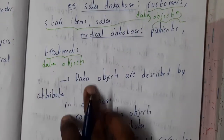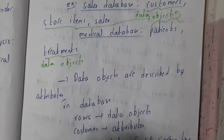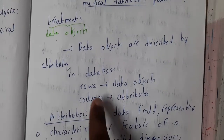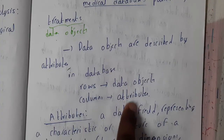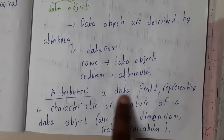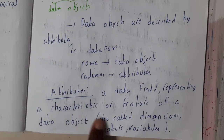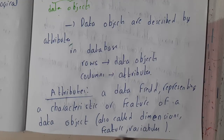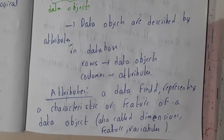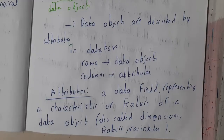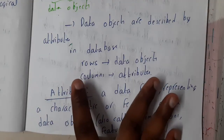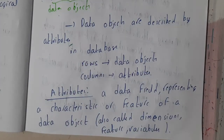Data objects describe attributes. So what are attributes? We fill data in terms of columns, and those columns are nothing but attributes. A data field representing a characteristic or feature of a data object is also called a dimension, feature, or variable. To clarify: each and every column is an attribute, and each and every row is a data object.